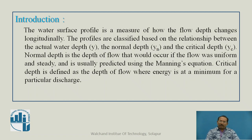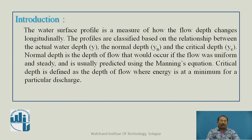Normal depth is the depth of flow that would occur if the flow was uniform and steady, and is usually predicted using Manning's equation. Manning's equation gives us the velocity: V = (1/N) × R^(2/3) × S^(1/2), where R is hydraulic mean depth, S is the slope, and N is Manning's constant.